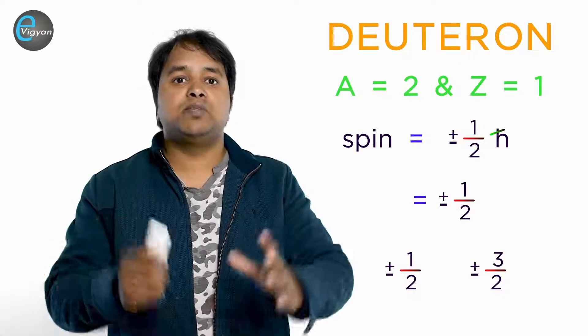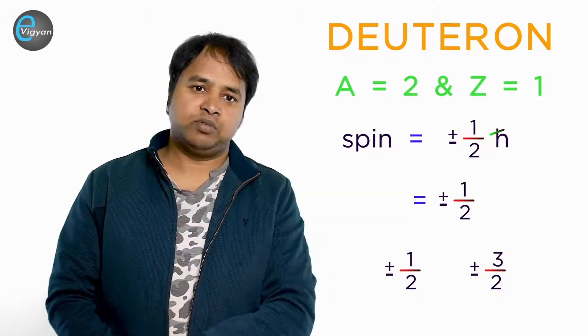And it is also a major problem for the proton-electron hypothesis. Now let's prove the proton-electron hypothesis wrong by calculating the magnetic moment value of the nucleus.